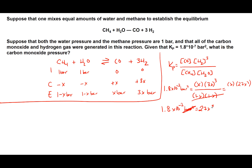Now we solve for X. Plugging into the calculator, we get X equal to 0.009. We can express this as just 9 because the sig fig value is 1 for the pressures of CH4 and H2O. The question asks for the pressure of carbon monoxide, and we know the equilibrium pressure of CO equals X, so the pressure is 0.009 bar, or in scientific notation, 9 times 10 to the negative 3 bar.